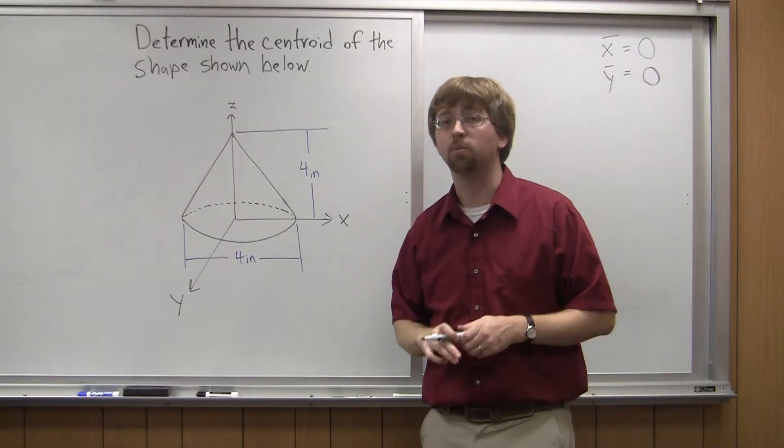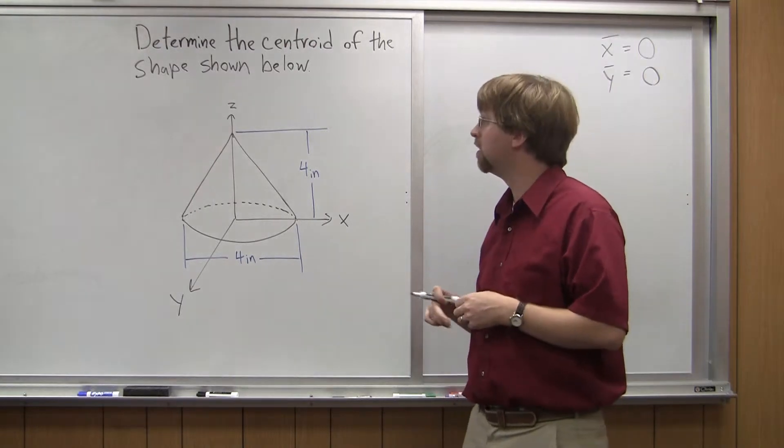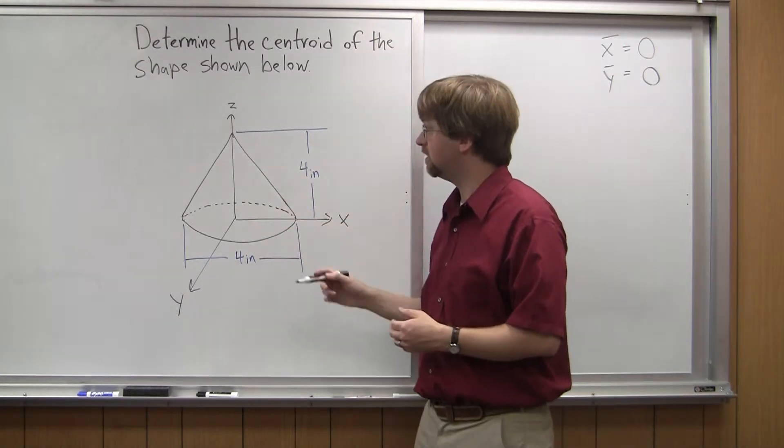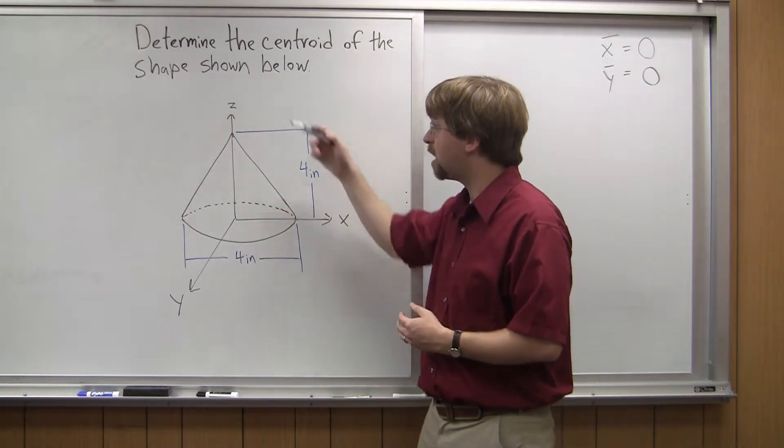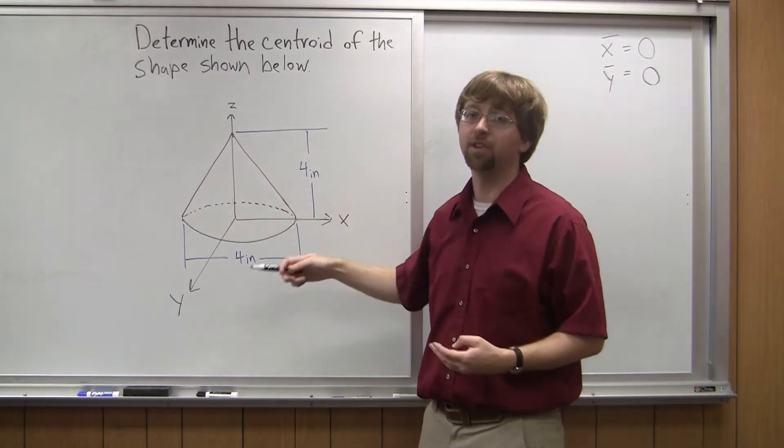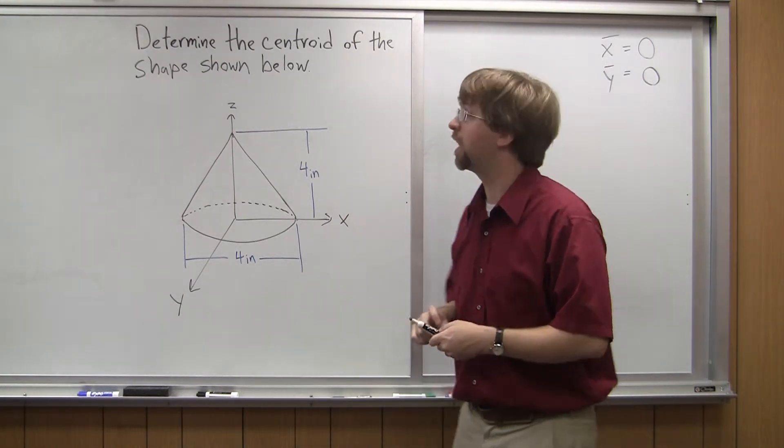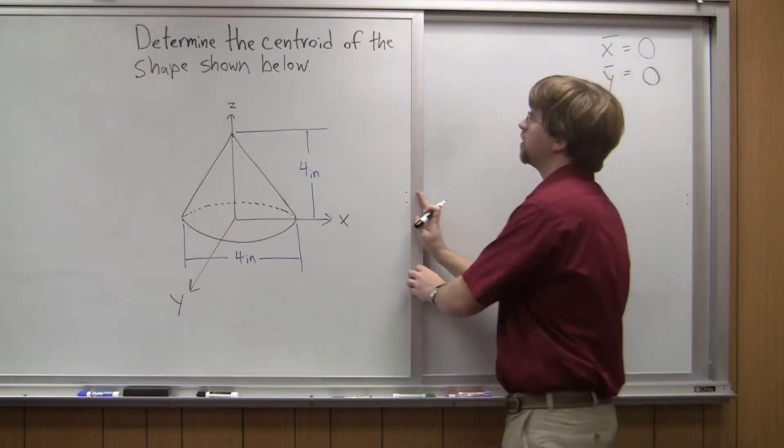Where I don't have symmetry and what I'm going to need to find is going to be the z-position of my centroid. So no matter how I cut this in the z-direction, the top half of the cone is not going to be a mirror image of the bottom half of the cone. This is where we differ. So I need to go ahead and calculate this.